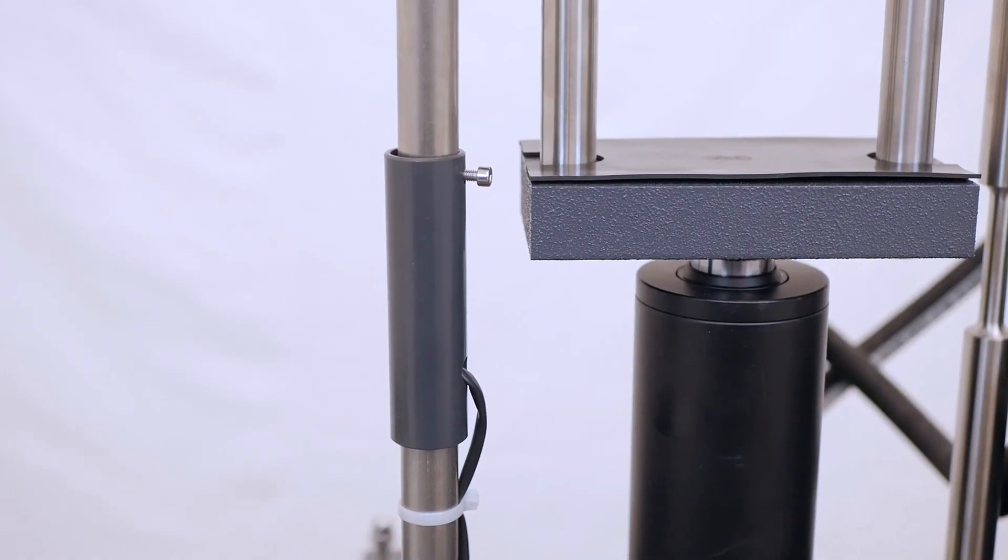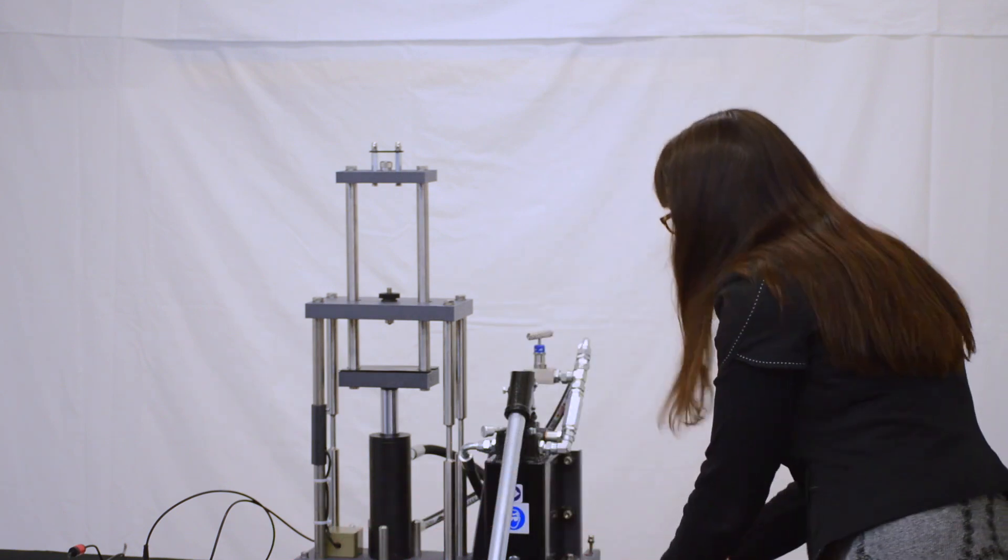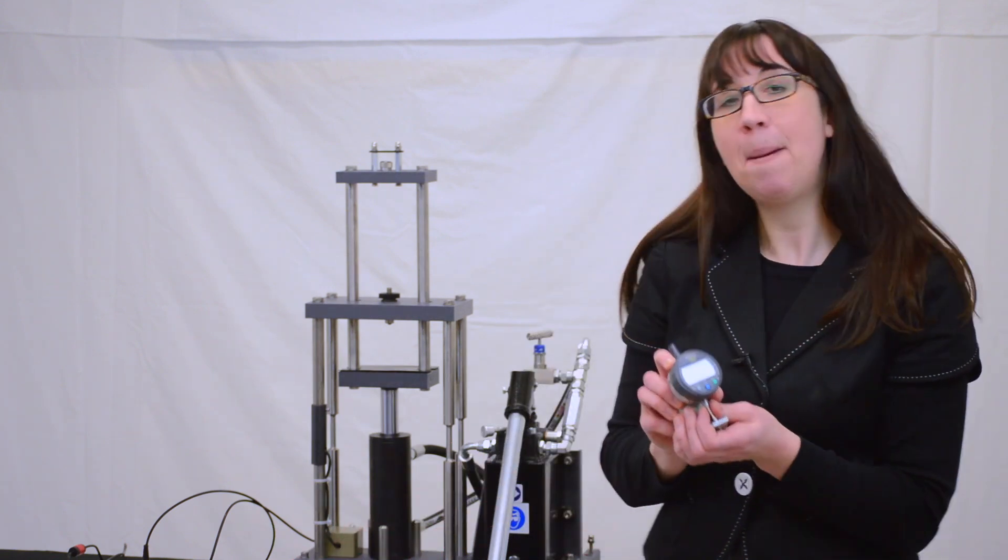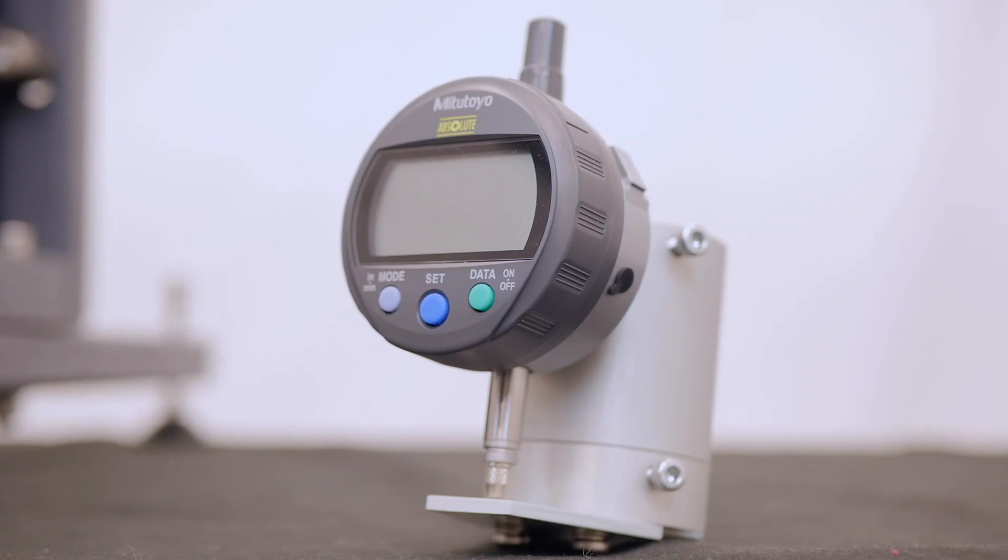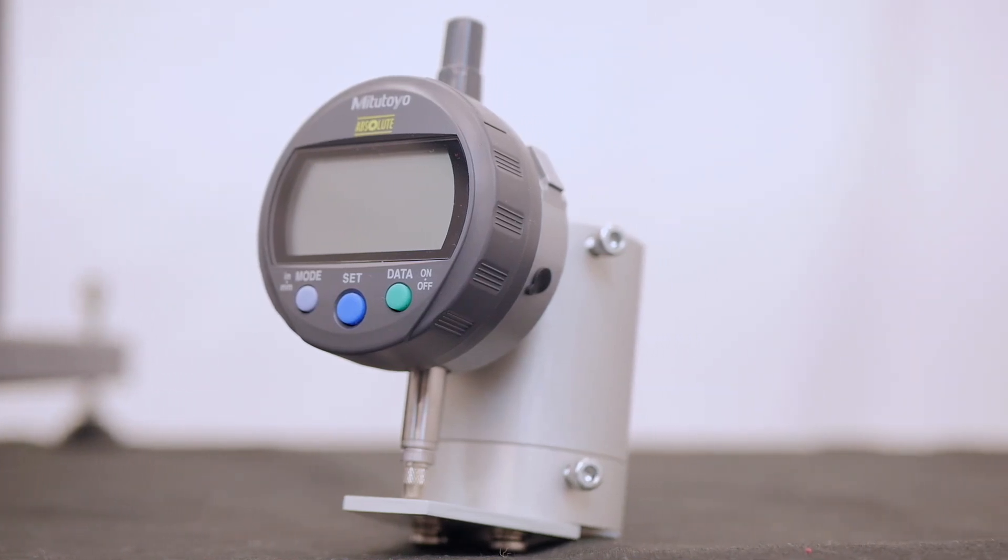A strain gauge fitted to one leg of the frame measures the force being applied whilst a detachable extensometer measures the change in length of the specimen. Both sensors connect to the instrumentation unit that displays the measurement values.